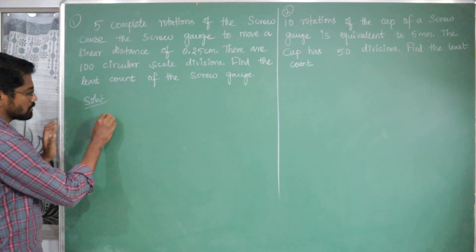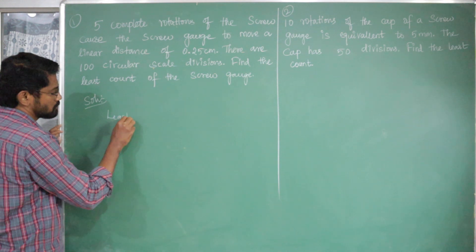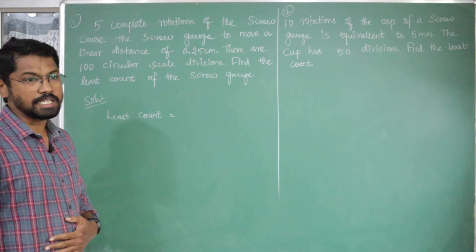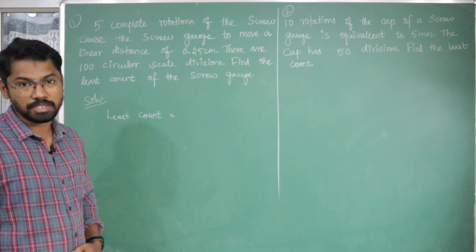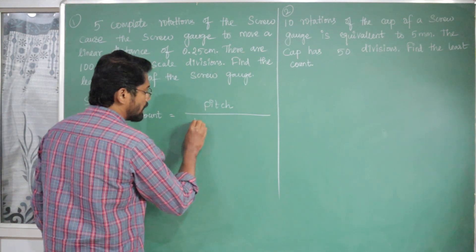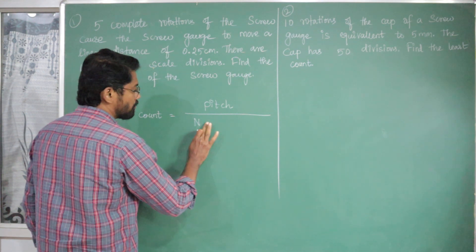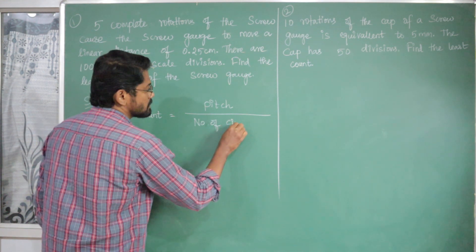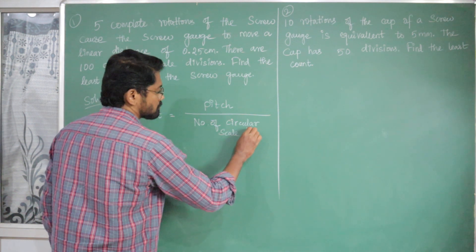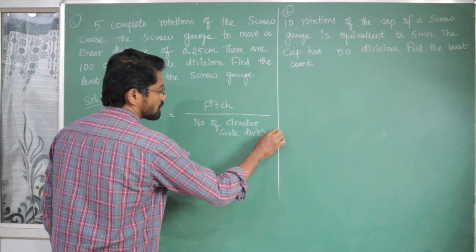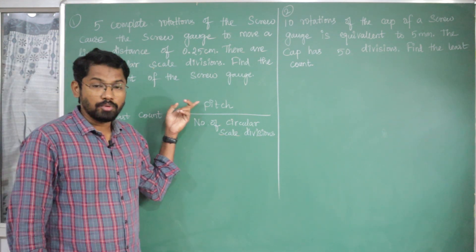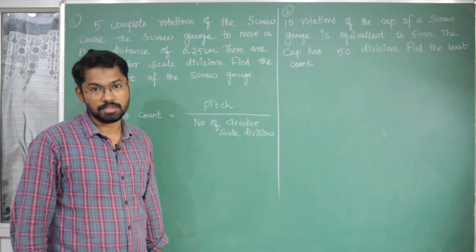Listen carefully. Least count — from the last video — is nothing but the ratio between pitch and number of circular scale divisions. The value is pitch divided by number of circular scale divisions.